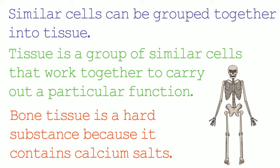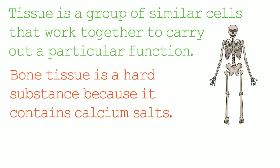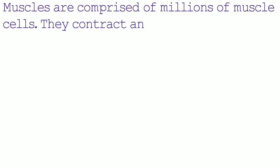Another type of tissue is muscle. Muscles are comprised of millions of muscle cells. They contract and relax. We have three different types of muscle.